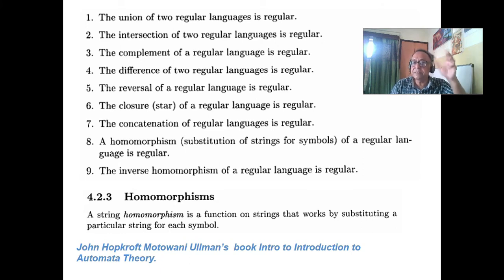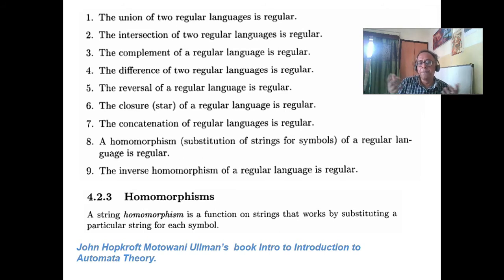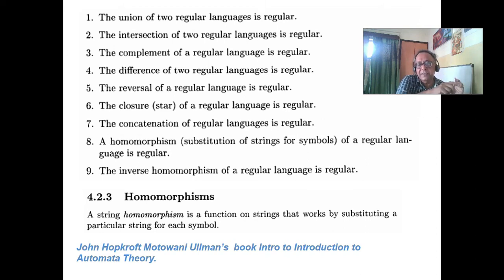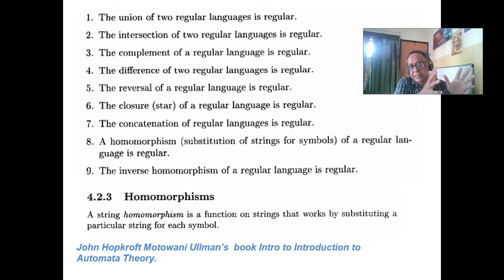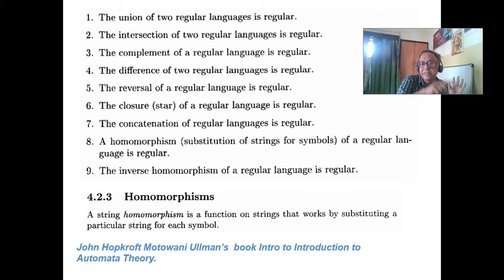What does the pigeonhole principle say? If you put 4 pigeons in 3 holes, at least one hole must have 2 pigeons — that is an obvious rule. If you have an infinite language with a finite number of states, then at some state there must be a loop. If you convert the pigeonhole principle to your FSM which generates the infinite language with finite states, definitely there are some loops between states. This is called pumping.